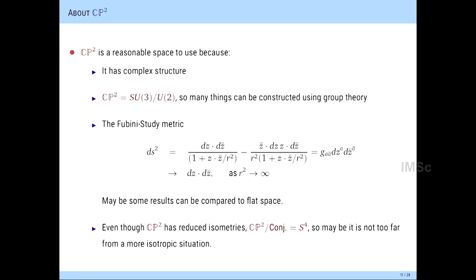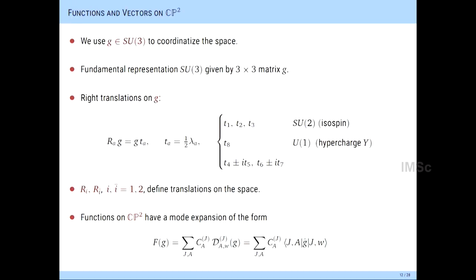Why choose CP2? CP2 is a reasonable space for various reasons. It has a complex structure, which is crucial for what we do. It's a group coset SU(3) mod U(2), so many things can be done using group theory. The Fubini-Study metric on CP2 has a parameter R (the radius) which if taken large tends to flat space. Furthermore, CP2 modulo conjugation is actually the four-sphere S4 — so it's not too far from what we might want to do in a more isotropic situation.